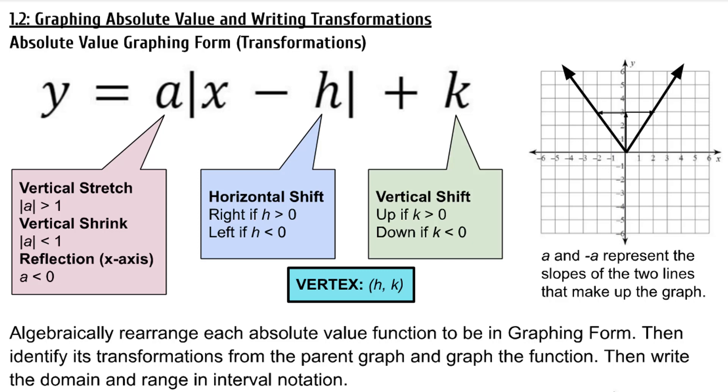Absolute value graphing form with transformations looks like this: y is equal to A, absolute value of x minus H, plus K.